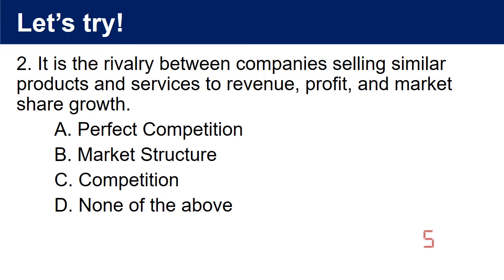Question 2: It is the rivalry between companies selling similar products and services to achieve revenue, profit, and market share growth. A. Perfect competition. B. Market structure. C. Competition. D. None of the above. The answer is C. Competition.